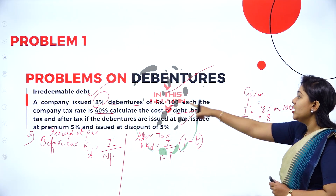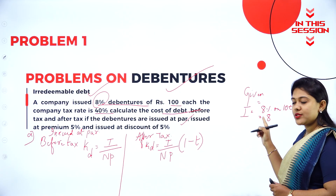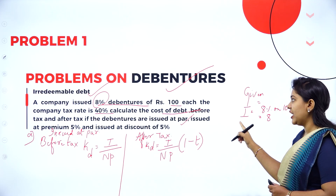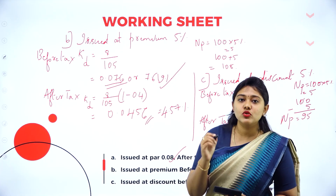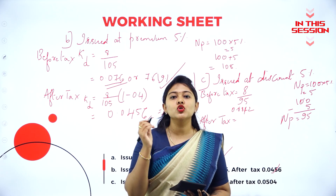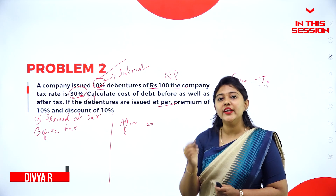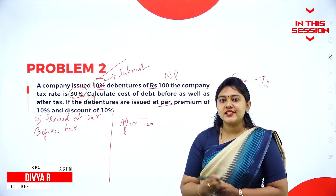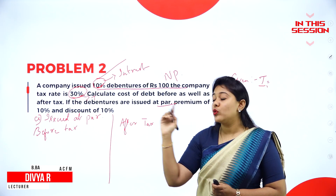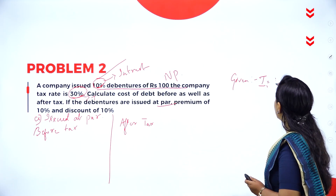So 8% on your 100 rupees, it will be 8 rupees will be your interest. What is the formula for after tax? Interest divided by net proceeds into 1 minus tax. 10% on 100 rupees, how do you get? If you do it on 100, you will get 10 rupees.